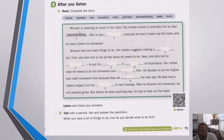Let's take some time and read through our story. The first one is done for us: 'Winston is listening to music in his room. His mother comes in and tells him to stop procrastinating.' So we've used this word already — procrastinating means finding other things to do rather than doing his work. We can pause the video and finish two through nine.